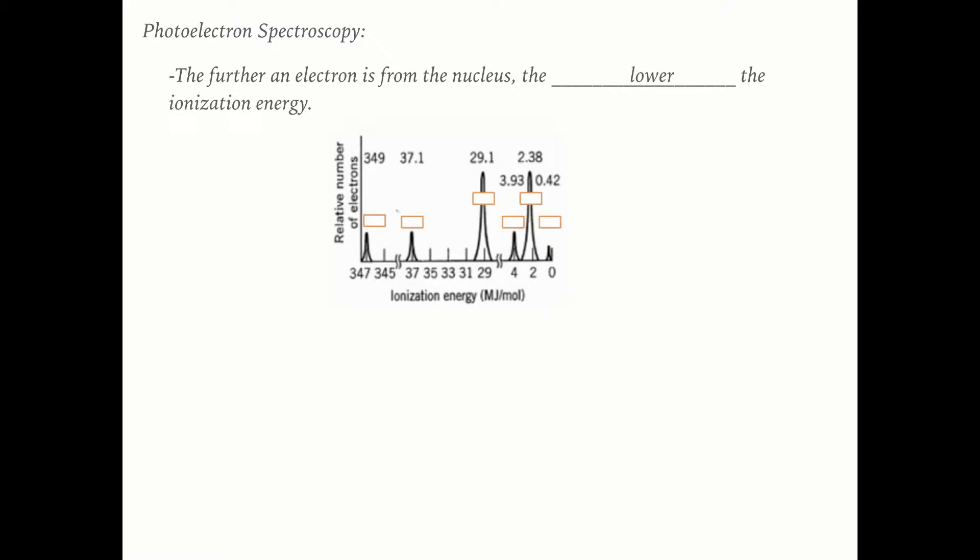If you look at this, notice ionization energy, we also will sometimes call it the binding energy, it decreases as you move from left to right. So since it decreases, that means that the peak furthest to the left has the greatest ionization energy, meaning it's the closest to the nucleus.